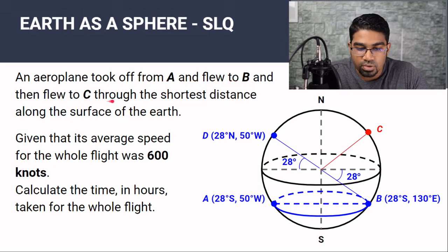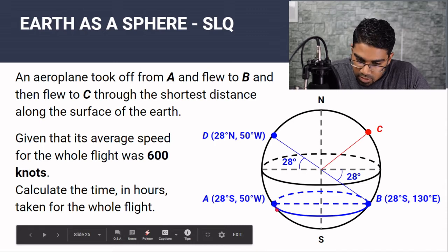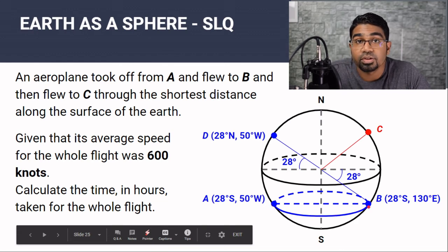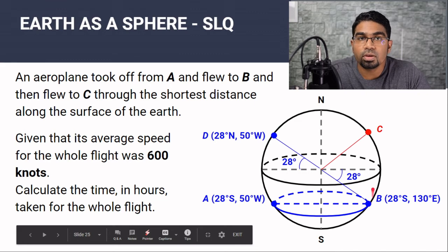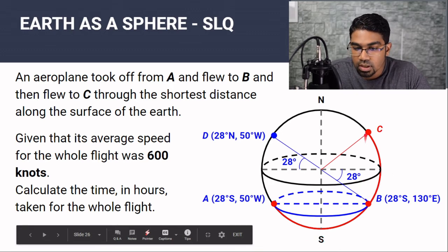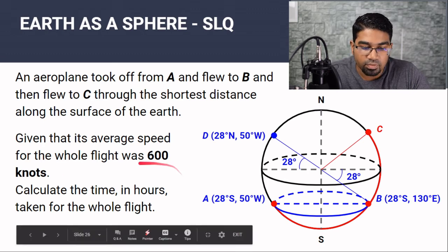An aeroplane took off from A, flew to B, and then flew to C through the shortest distance along the surface of the Earth. There are two ways to go from A to B: along the parallel of latitude, or through the south pole. The shortest distance always goes through a pole — in this case the south pole. So the path of the aeroplane goes from A through the south pole to B, then from B up to C.